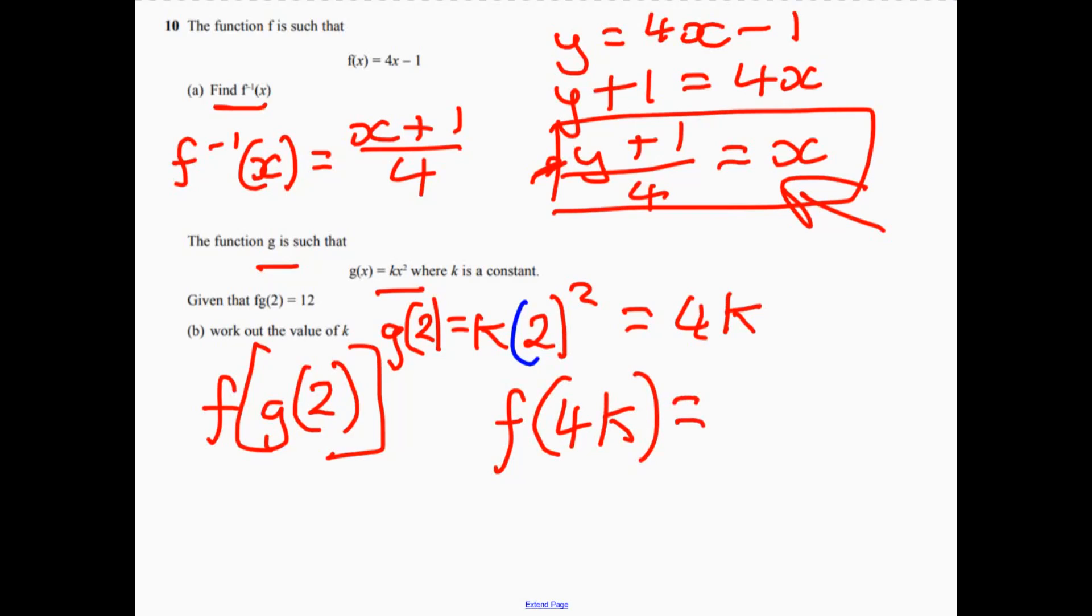So I'm going to rewrite what function f is, but instead of putting x in there, we're going to put 4k. So we can write 4, and then 4k, and then take away 1. So that's obviously 16k, take away 1.